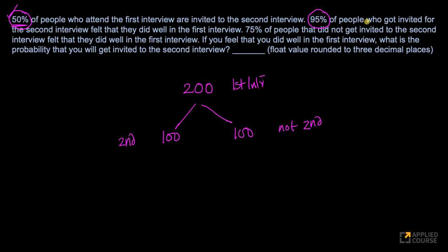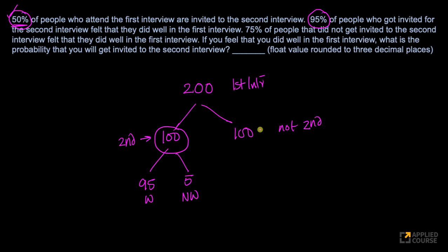Now, 95% of the people who got invited for the second interview felt they did well in the first interview — so 95 out of those 100 felt they did well (W), and 5 felt they did not do well (NW). Of the 100 who were not invited to the second interview, 75 felt they did well and 25 felt they did not do well. All three given facts are now accounted for.